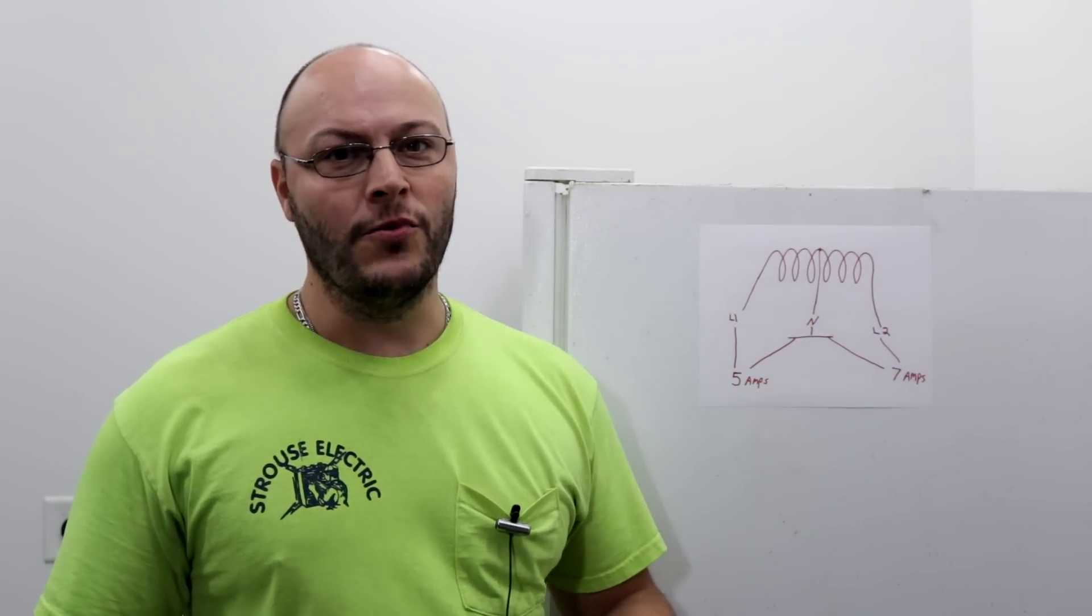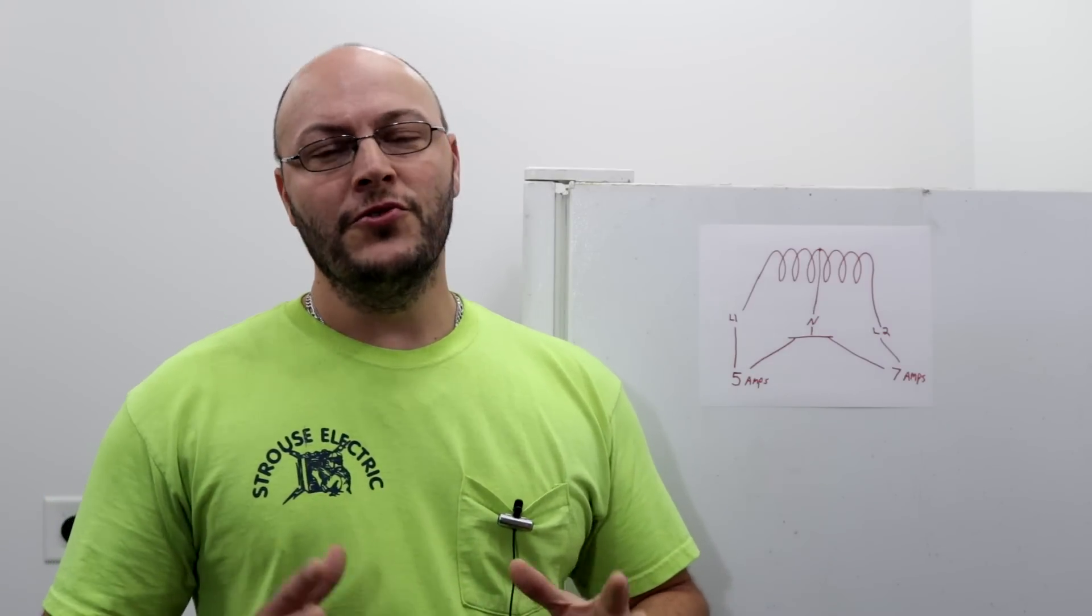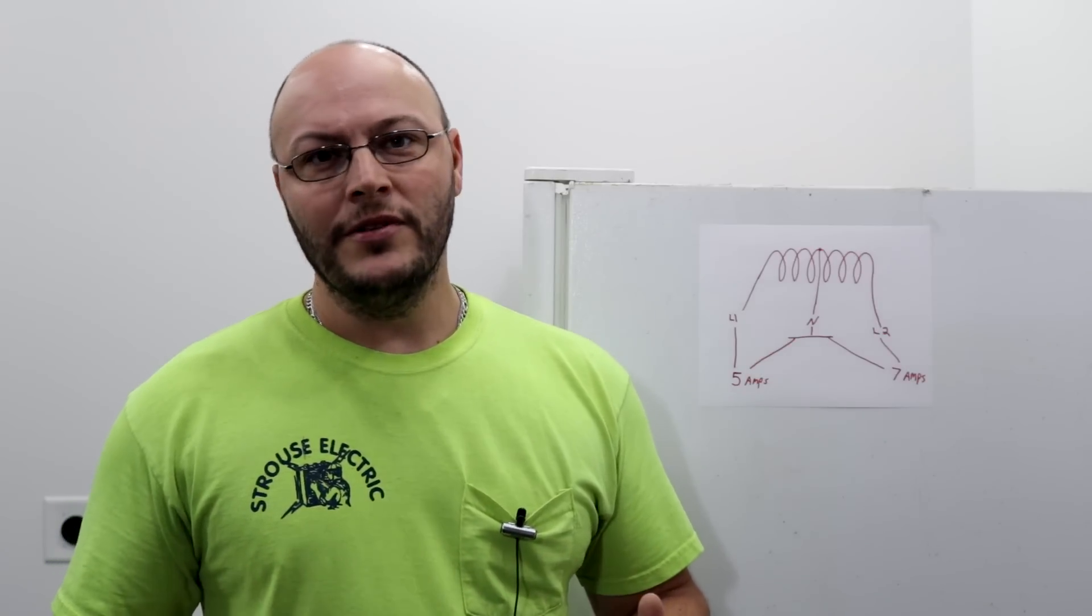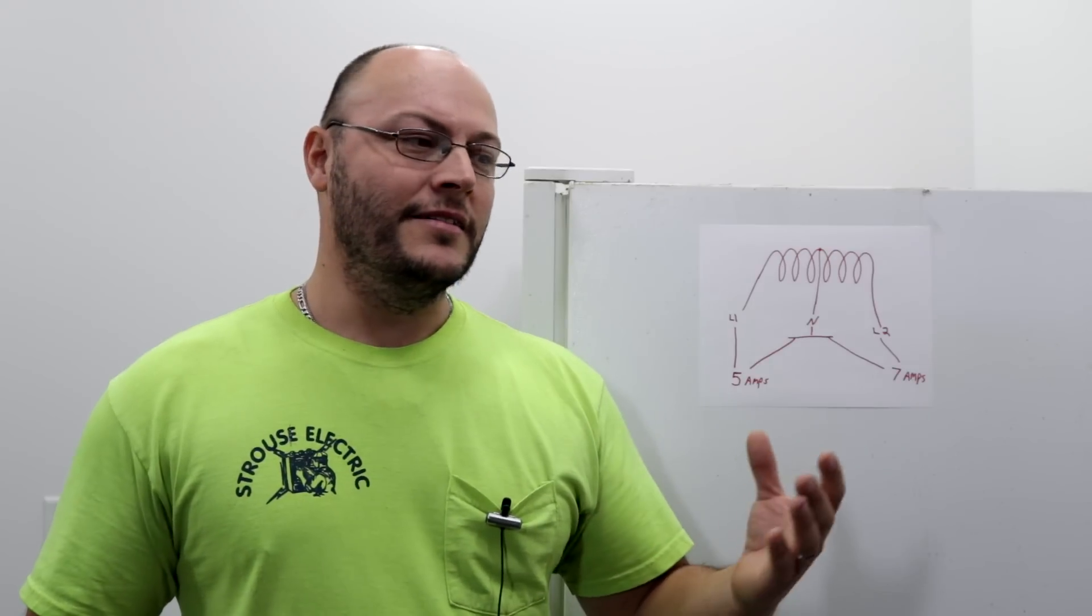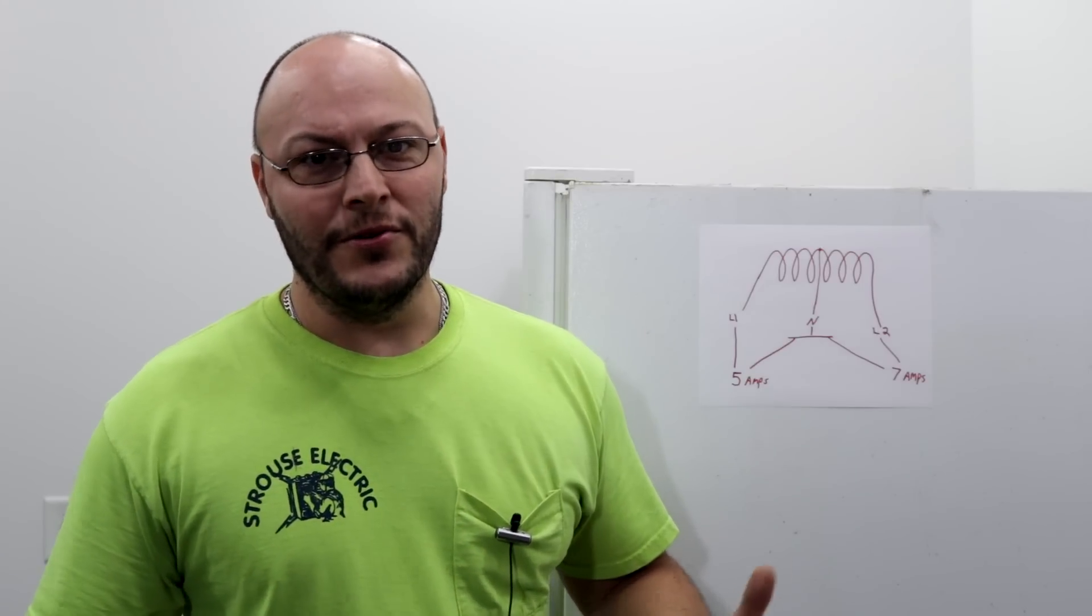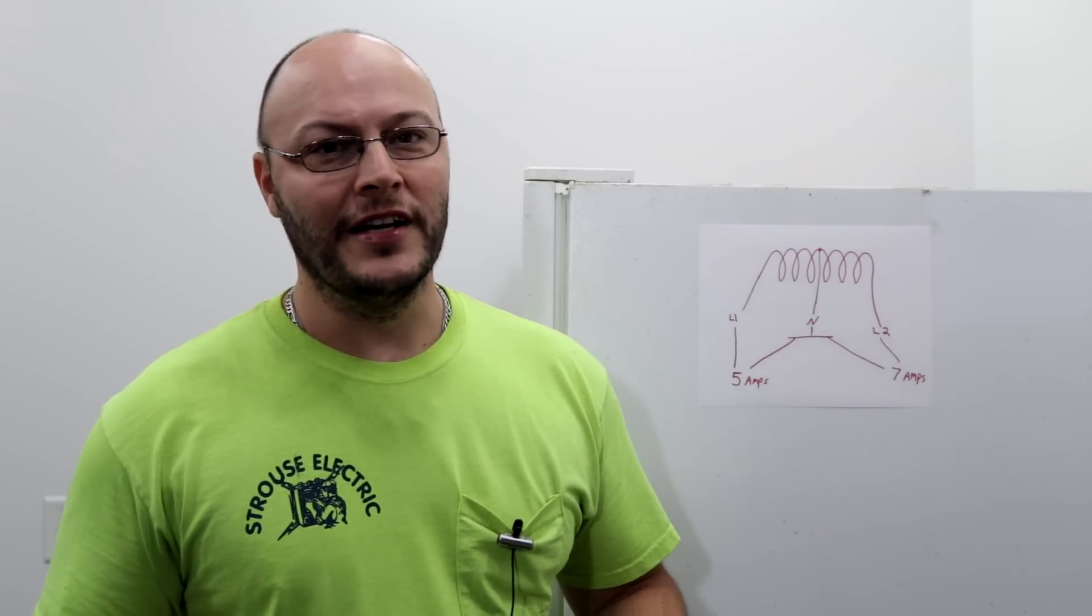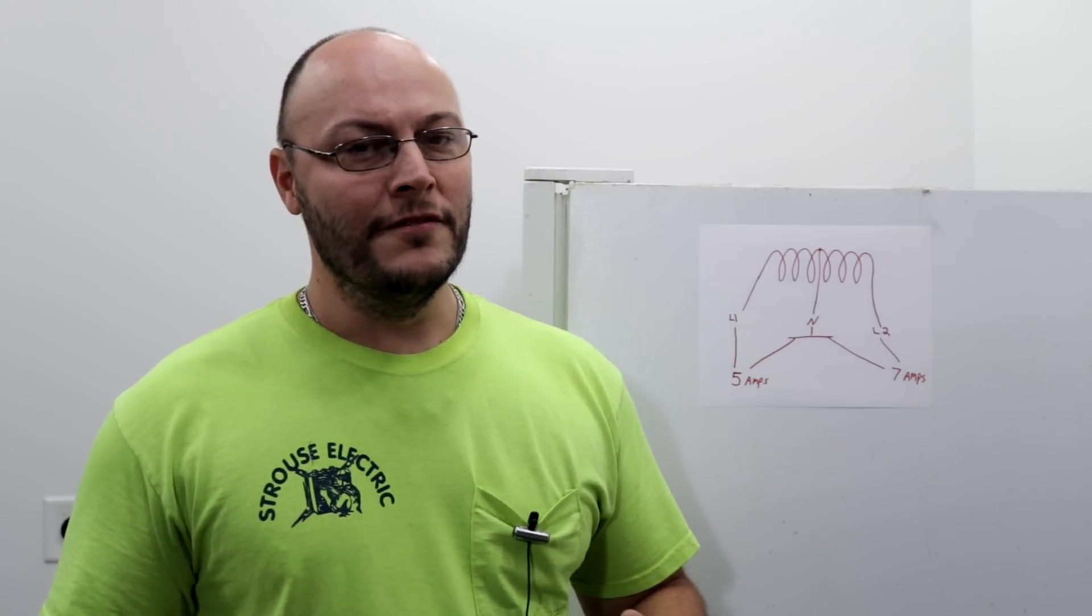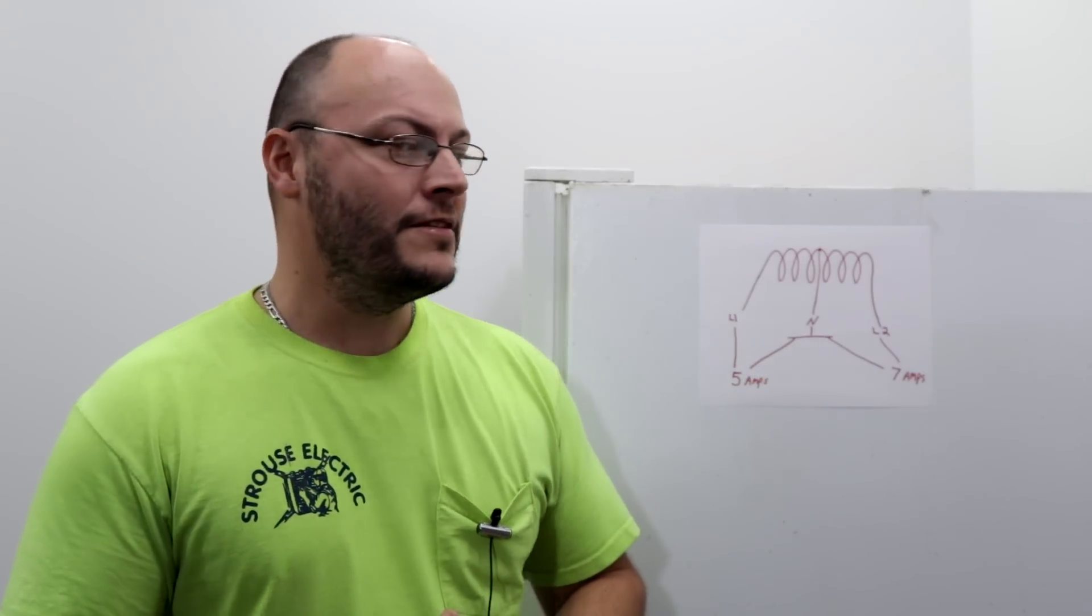So what does the neutral do? Now, the neutral is not a ground - two completely different things. The ground in your system, basically if you have a lightning strike at the lines outside your house, it's to provide a path for the voltage to go to the earth so it doesn't blow up your TV or your appliances or whatever you got in your house. So that's the main job of the ground - has nothing to do with voltage. The transformer is what controls all the voltage.